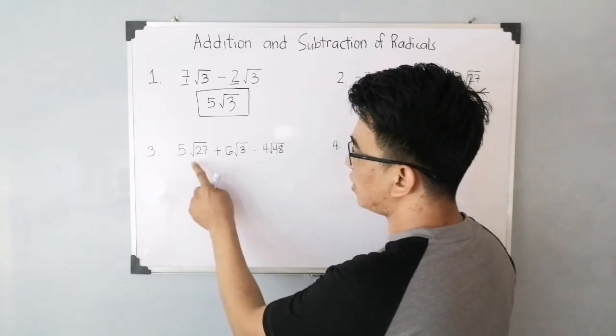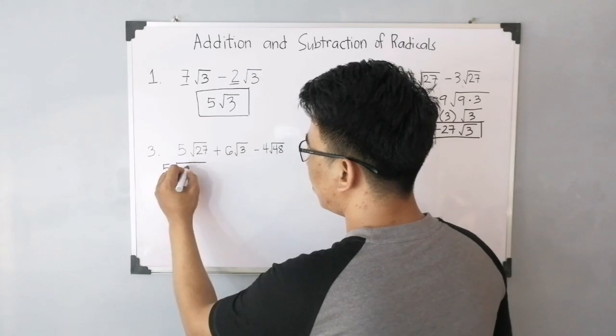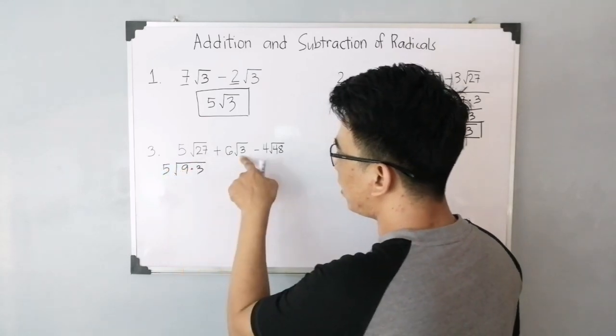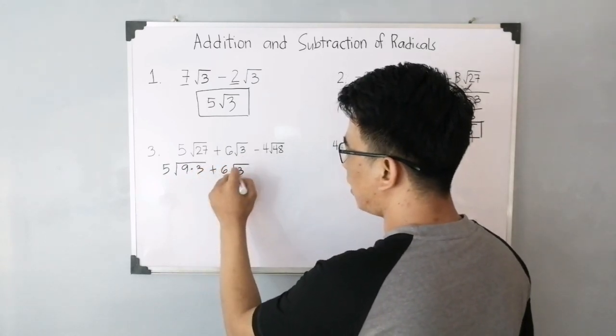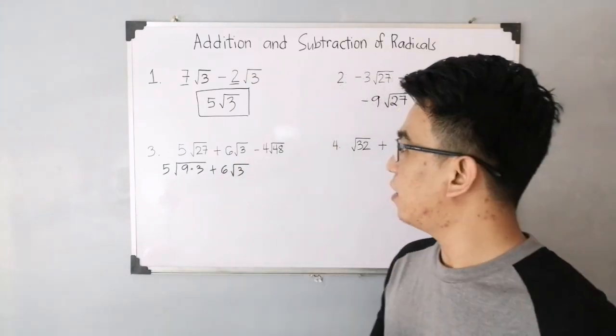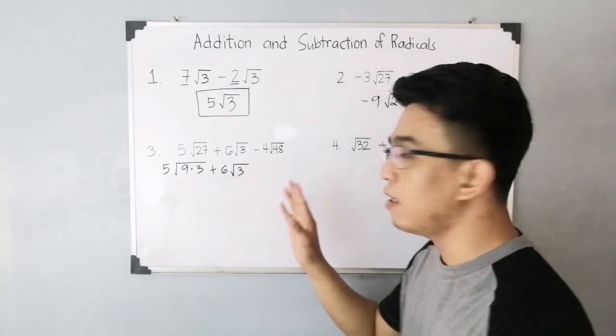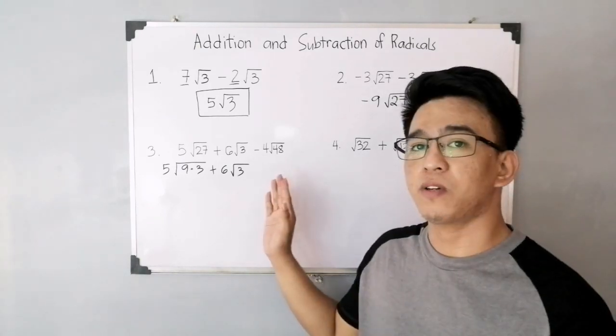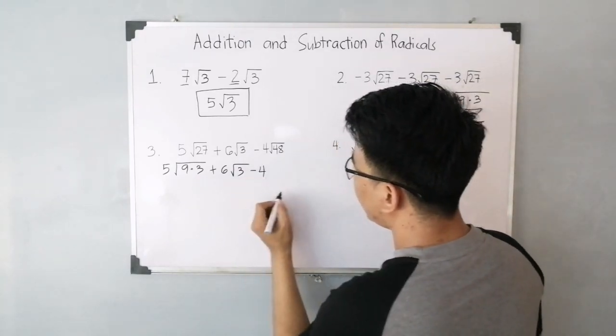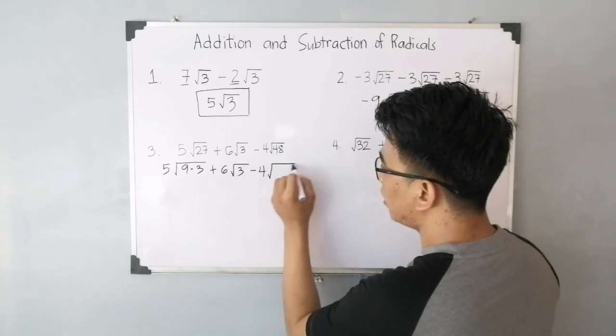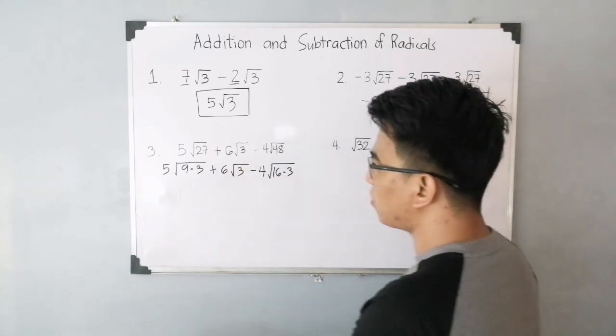For 27, we know that the factors of 27 are 3 and 9. So you have 5 times the square root of 9 times 3. For the next term, 3 has no other factors, so we can easily copy your second term, which is 6 plus the square root of 3. Now, as you can see, we have common numbers in our factors. We have 3 and 3 here. This means it's possible that one of the factors of 48 is 3. So let's try: you have negative 4 and the factors of 48 are 16 times 3. Notice we have a common factor now. So we need to extract the roots.